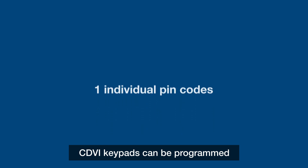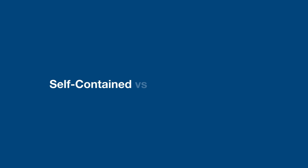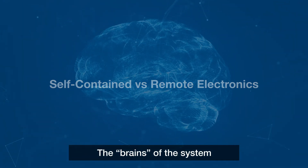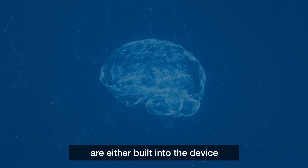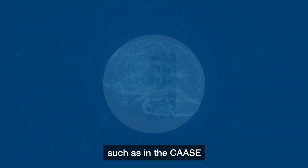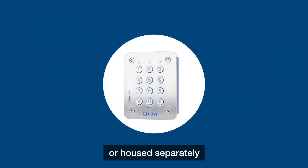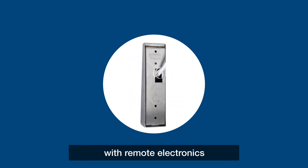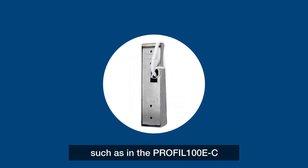CDVI keypads can be programmed with 1 to 100 user codes. The brains of the system are either built into the device, such as in the CAASE, or housed separately with remote electronics, such as in the Profil 100 EC.